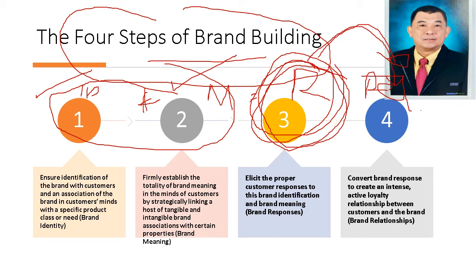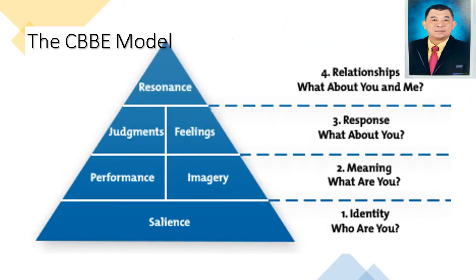Very simple to understand. Identity plus meaning gives a response, and because of that response, it creates a relationship between the customers and your brand. In this customer-based brand equity model triangle, you can see that the base of the triangle is quite large and the apex is at the top. These are the stages.